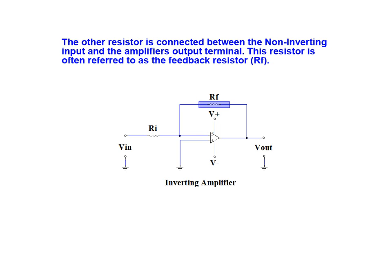The other resistor in the circuit is connected between the inverting input and the amplifier's output terminal. This resistor is often referred to as the feedback resistor RF.